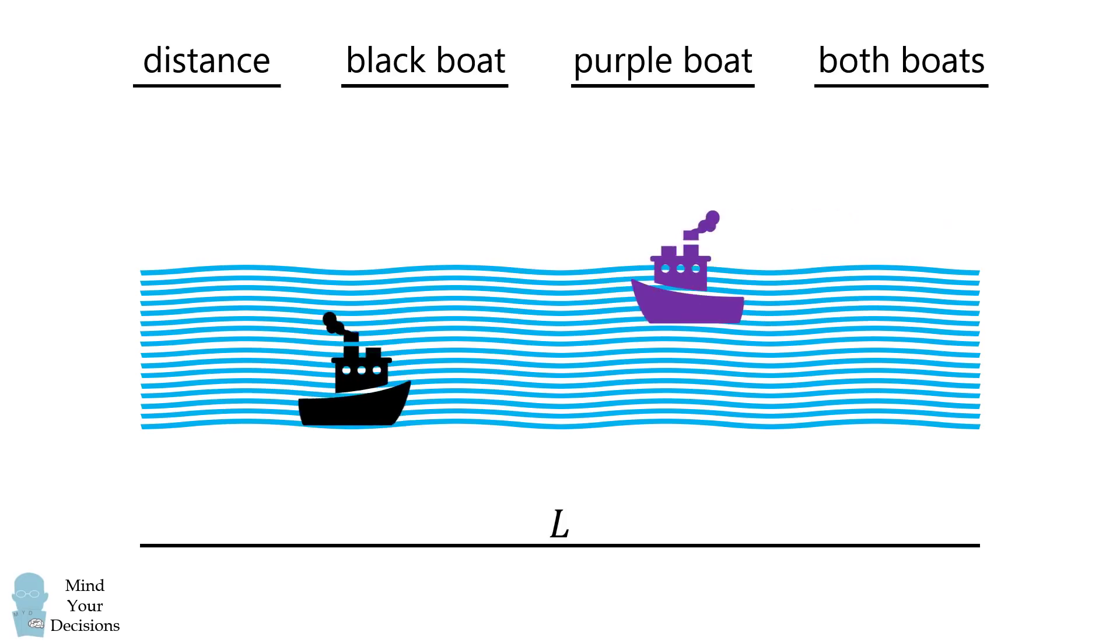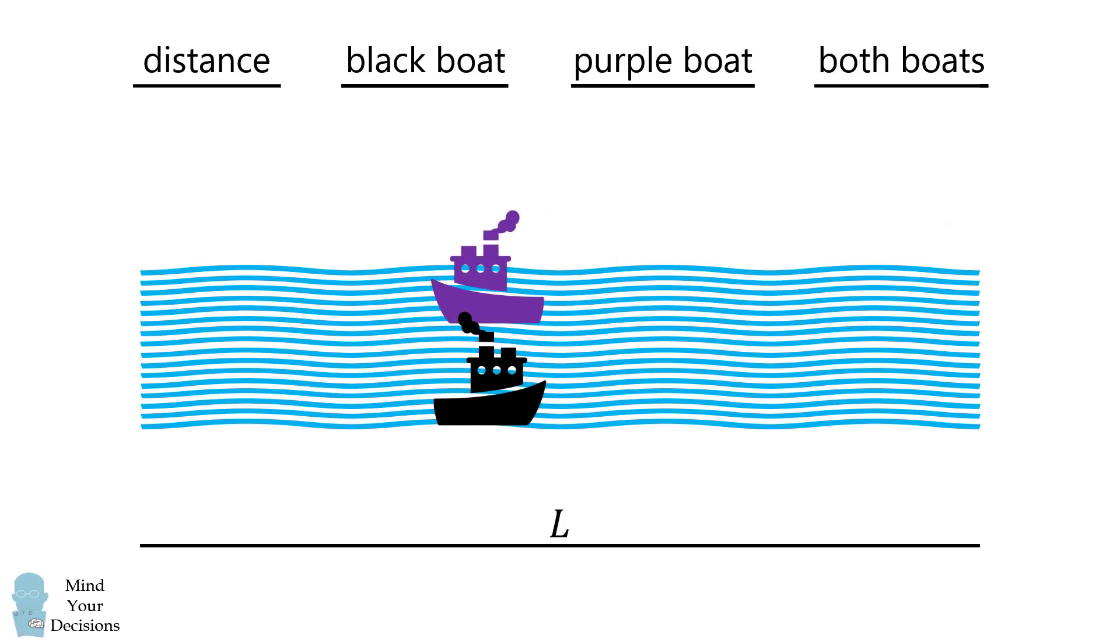Let's first look at the first time the two boats meet and pass each other, which is 500 units from the left shore. The black boat has moved 500 units, the purple boat has moved L minus 500, and if we add up these distances, the total distance by both boats equals L.